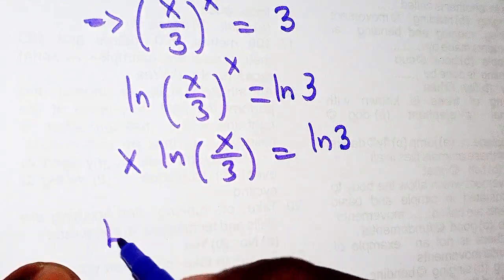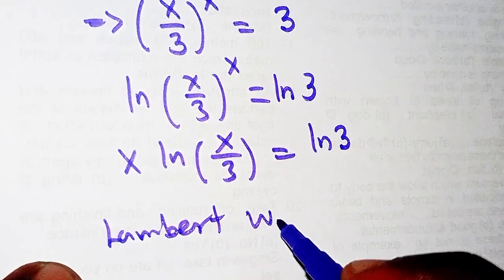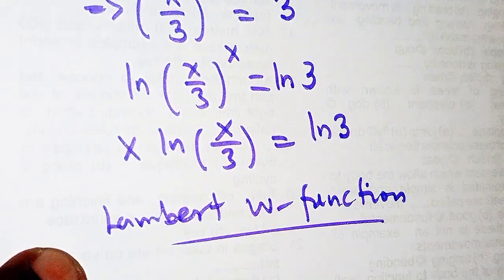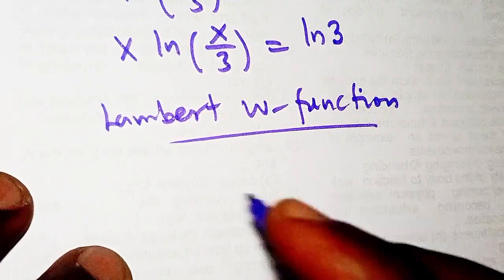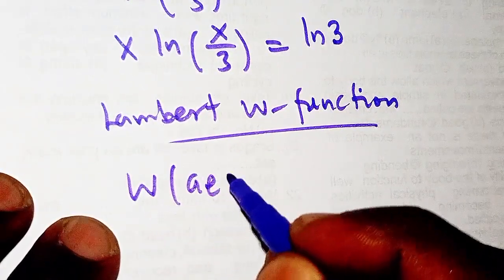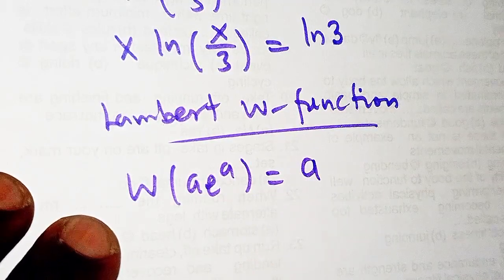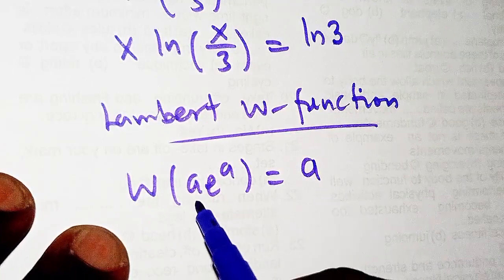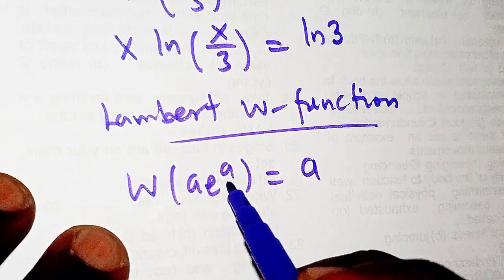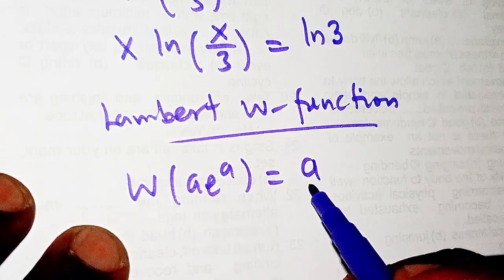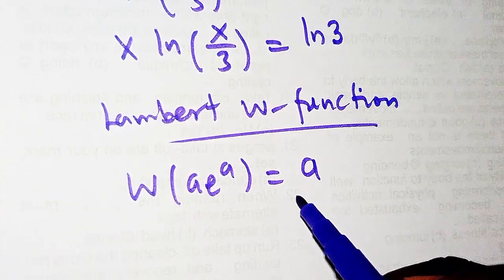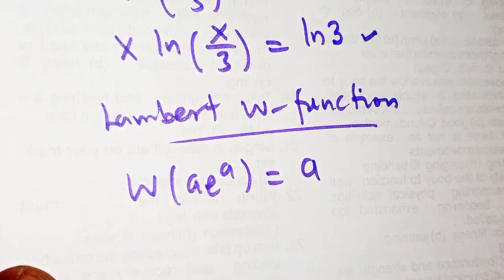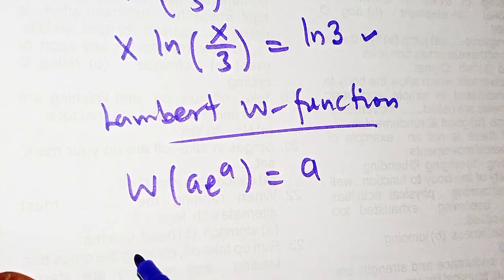From here we are going to introduce what we call the Lambert W function. That is what we are going to use to get the value of x. The Lambert W function is defined in this form: W(a · e^a) = a. When you take the Lambert W function of that expression you get a, because a is both the coefficient of e and the power of e.